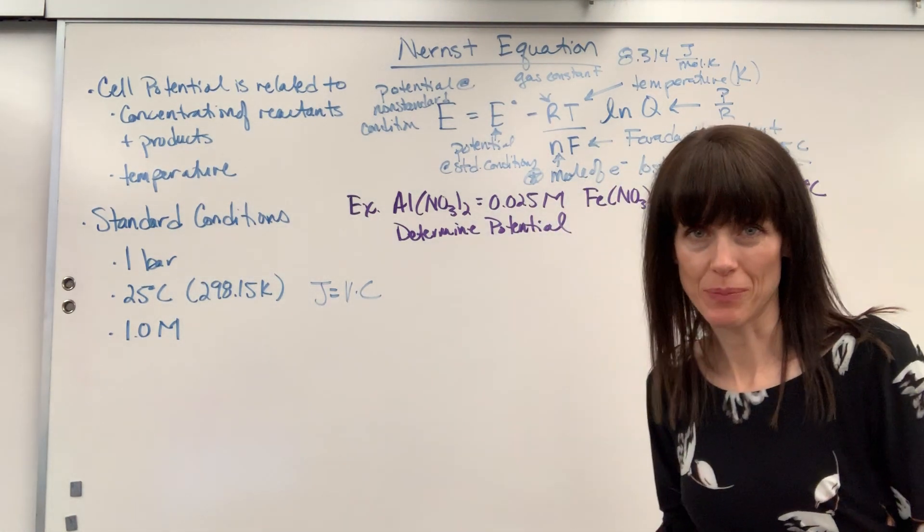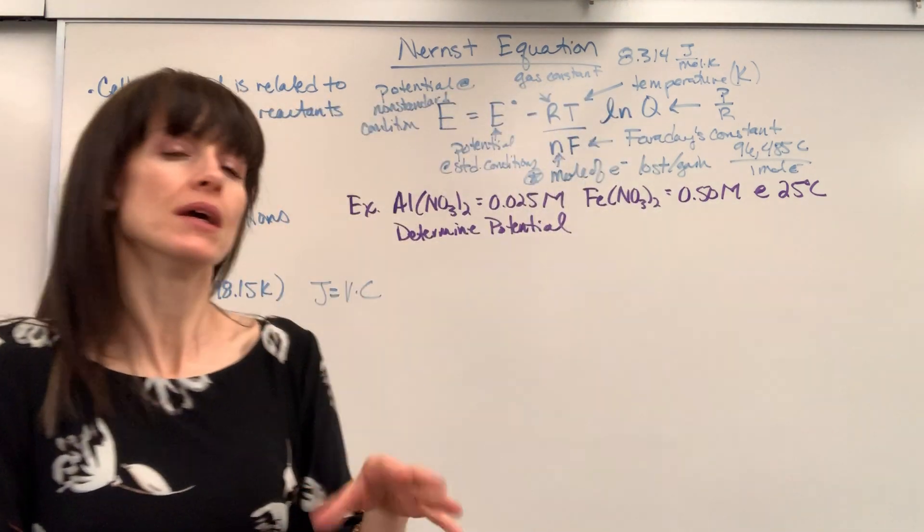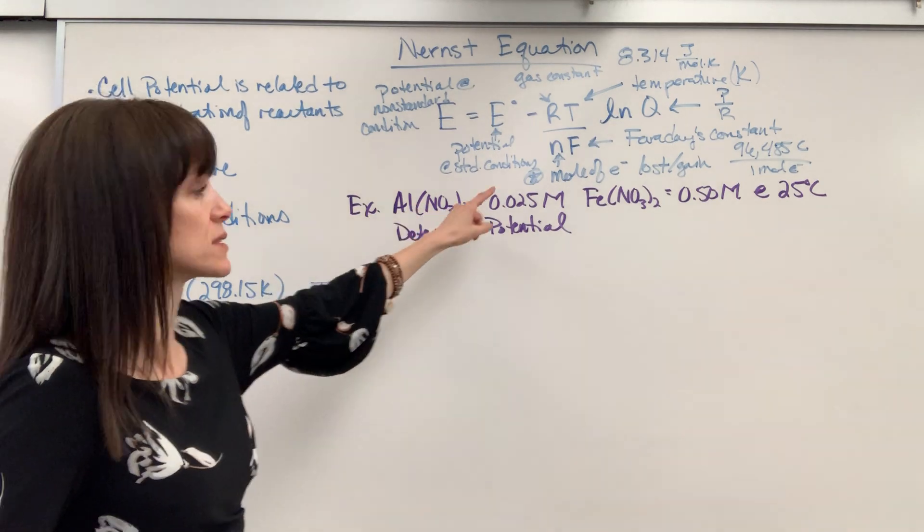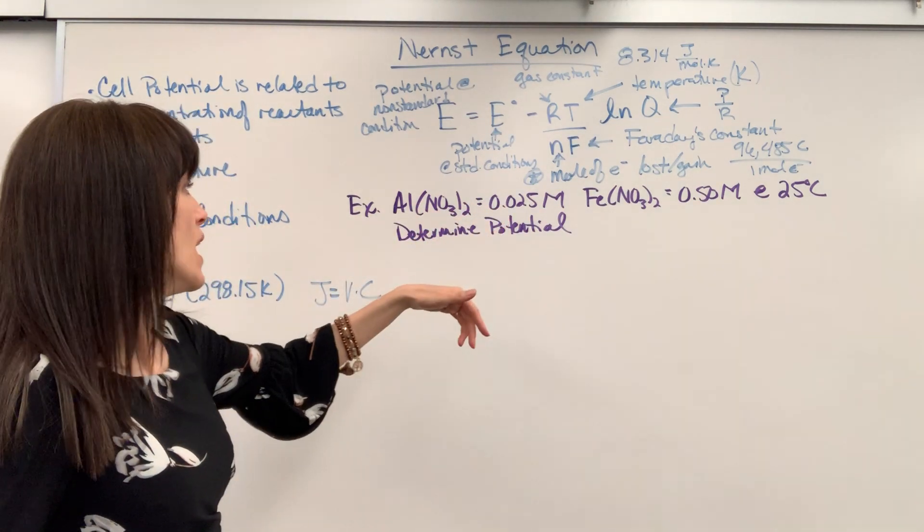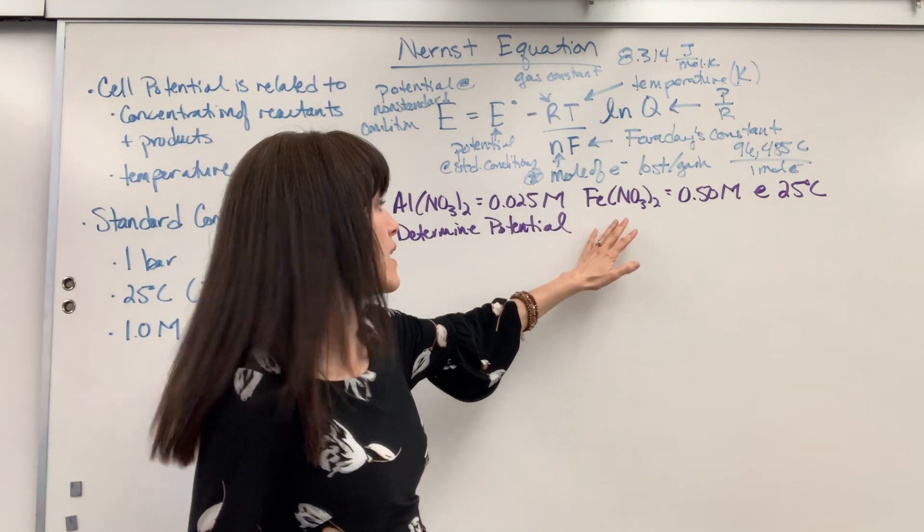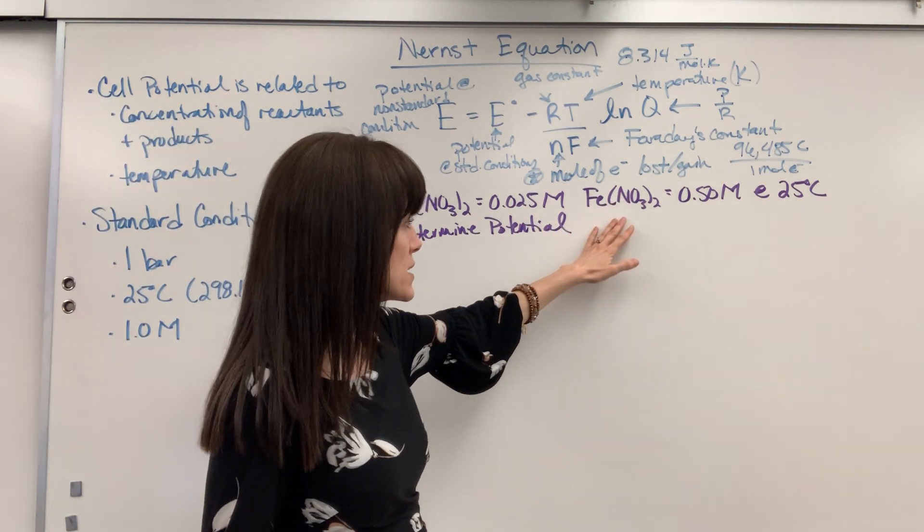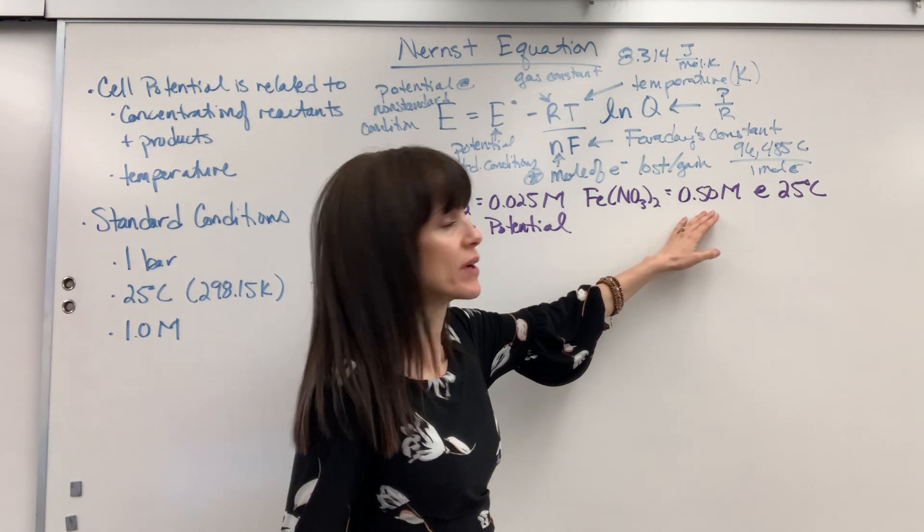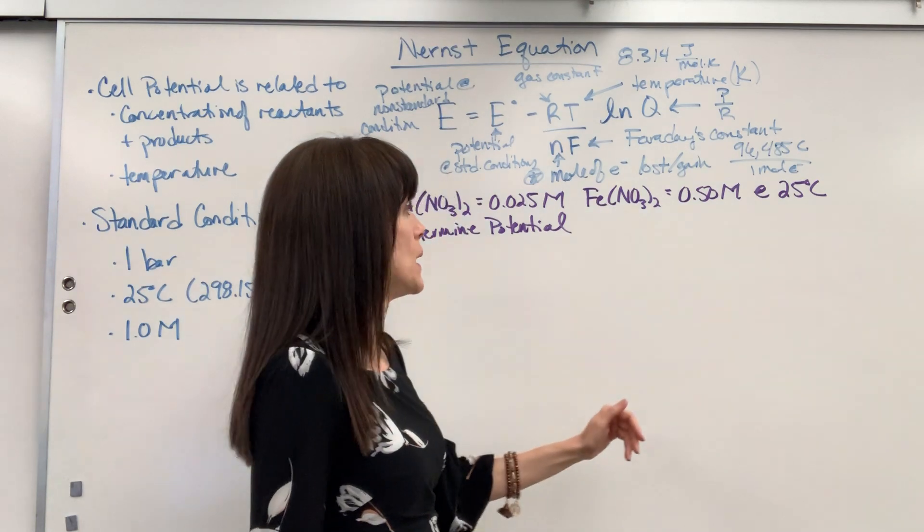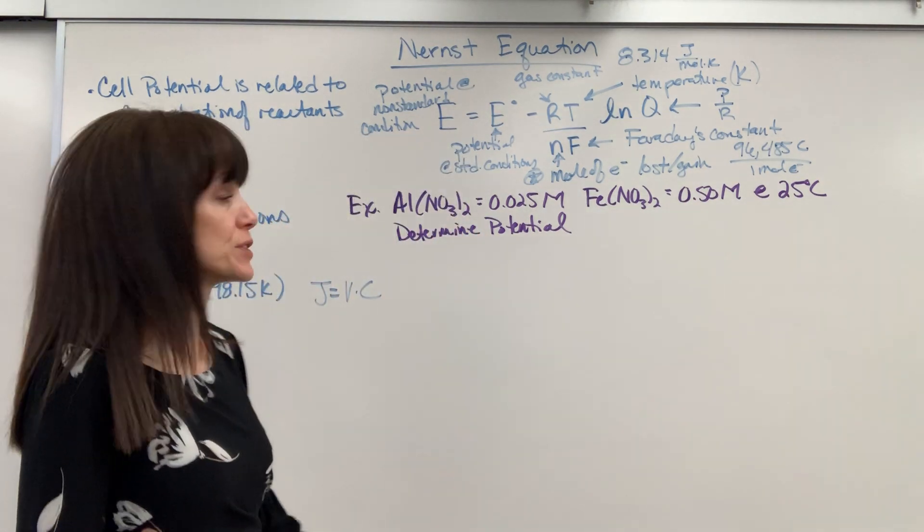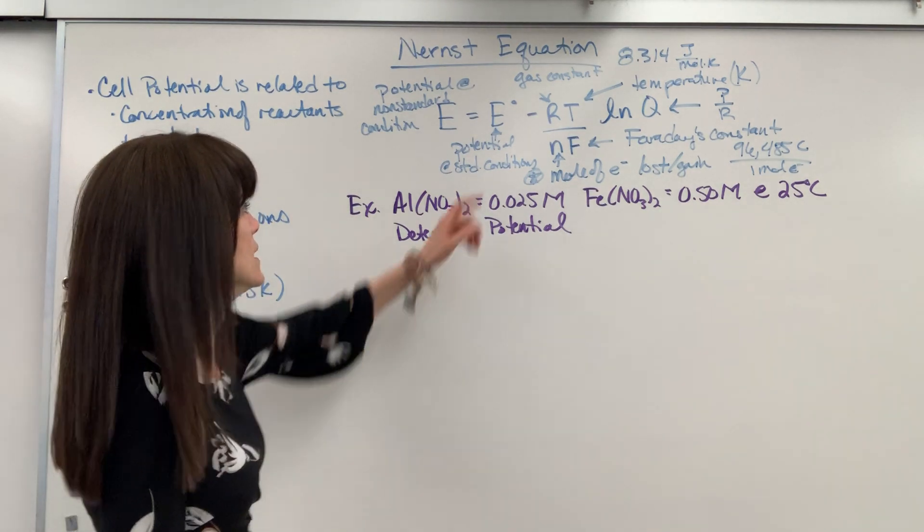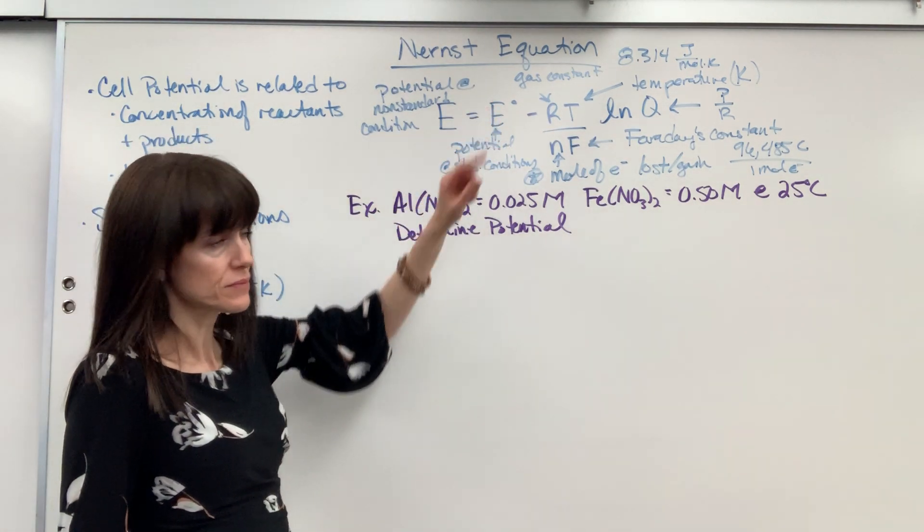So I have an example up here to help you walk through this. It can be a little bit of work. Here's our example. We're going to have an aluminum nitrate with concentration 0.025, and we're going to have an aluminum electrode. And then we're going to have our other half cell be an iron 2 nitrate with concentration 0.5. And of course, in this half cell, you would also have an iron electrode. And it's at 25 degrees C. They say determine the potential.